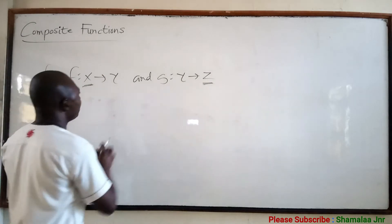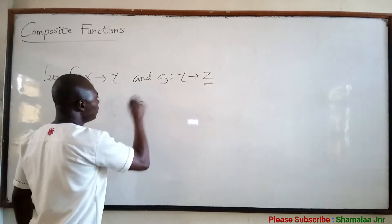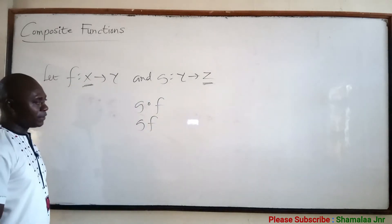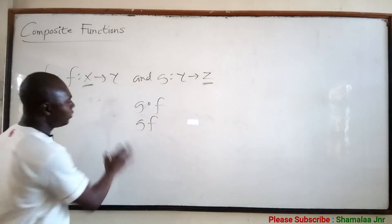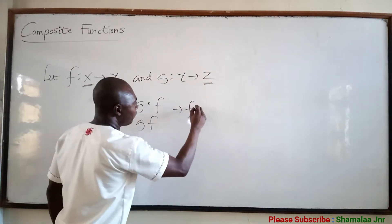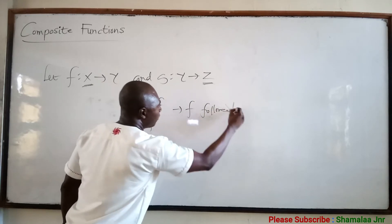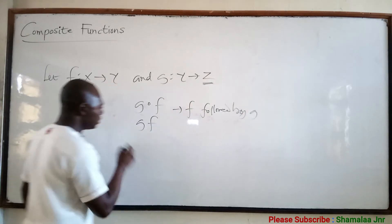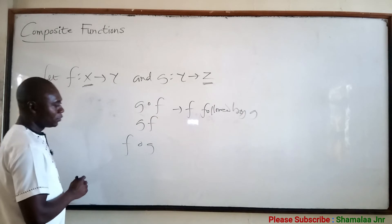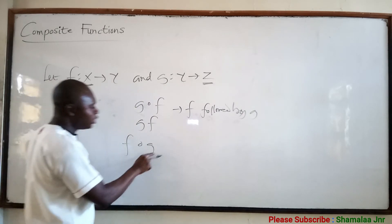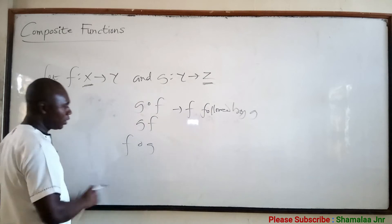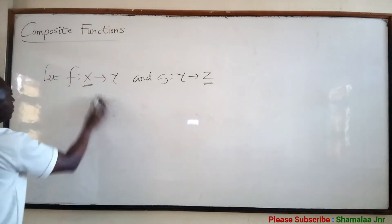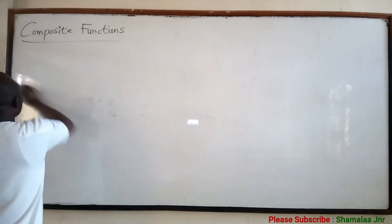In this case, the composite function will be written as G of F, or simply GF. When you write G of F, this means F followed by G. Similarly, F of G also means F followed by G — and G of F means G followed by F.